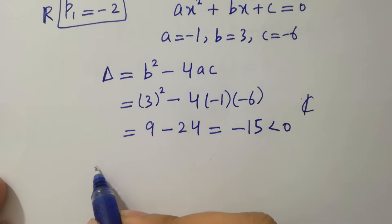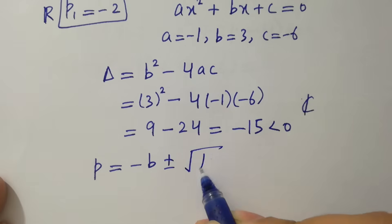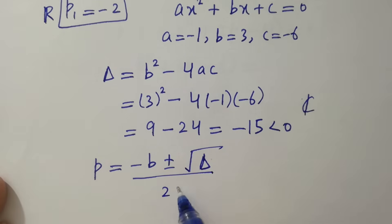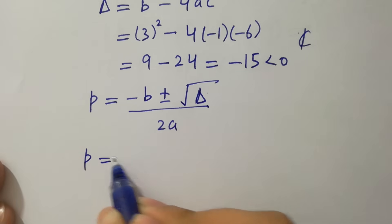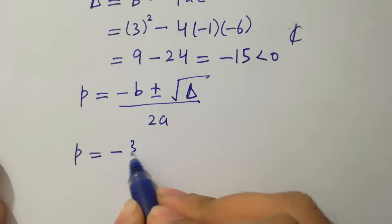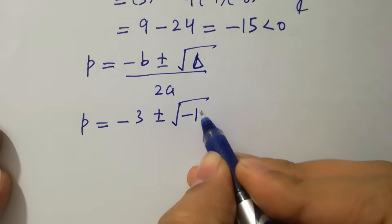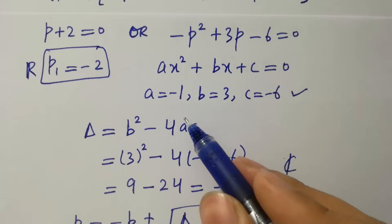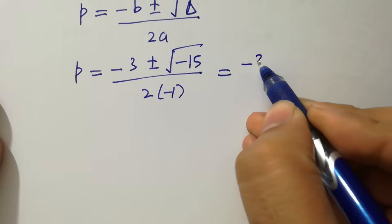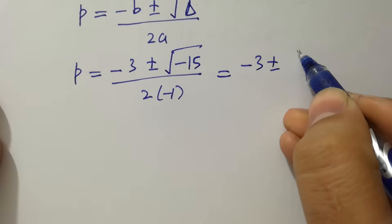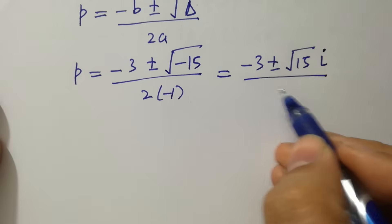Applying the quadratic formula: p equals (minus b plus or minus square root of discriminant) over 2a. Substituting values: p equals (minus 3 plus or minus square root of minus 15) over (2 times minus 1). Since square root of minus 1 equals i from complex numbers, this becomes (minus 3 plus or minus square root 15 times i) over minus 2.